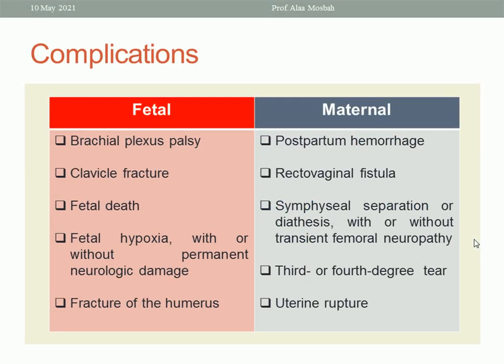What about the complications of shoulder dystocia — fetal or maternal? Fetal complications include: brachial plexus palsy (most common), fracture of the clavicle or humerus, fetal death, and fetal hypoxia with or without permanent neurologic damage. For the mother: postpartum hemorrhage due to uterine atony, uterine rupture, vaginal, cervical, or perineal laceration, extended episiotomy or perineal tear, rectovaginal fistula, symphysial separation with or without transient femoral neuropathy, and third or fourth degree tear.